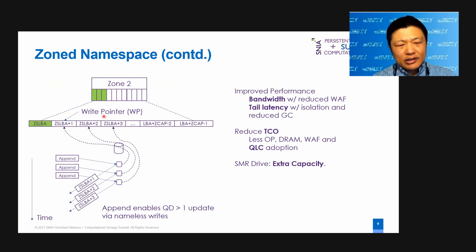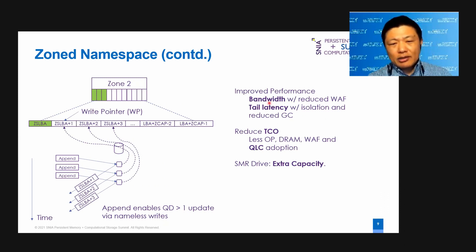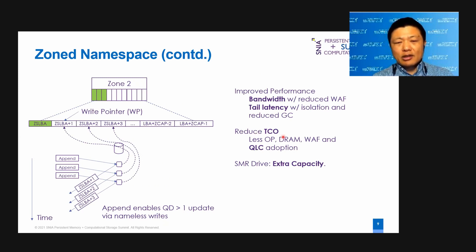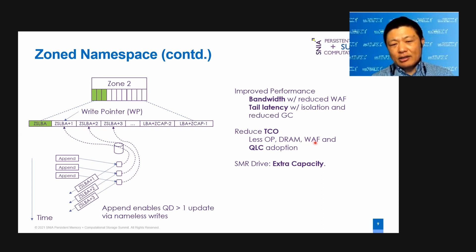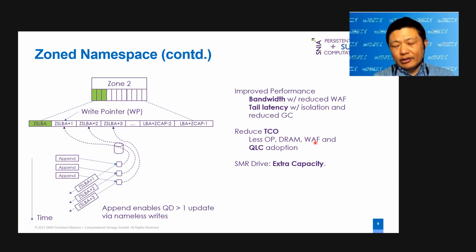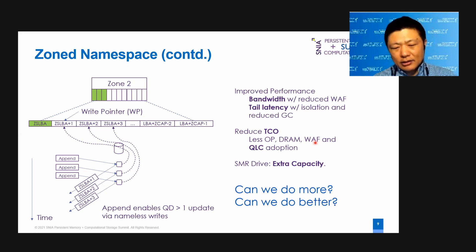The caveat of the append command is that it's a nameless write — meaning append doesn't specify the address; instead the written address is returned by the device. As we can see, zone namespace improves performance: increased bandwidth by reducing the write amplification factor, improved tail latency with zone isolation, and reduced TCO overall — by enabling less over-provisioning, using less DRAM, reducing write amplification factor, and enabling adoption of QLC medium.